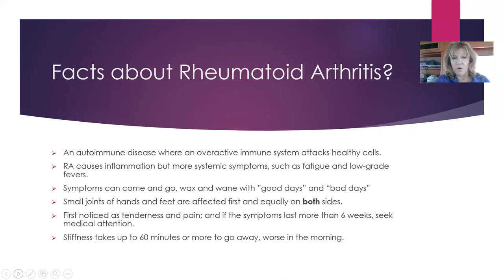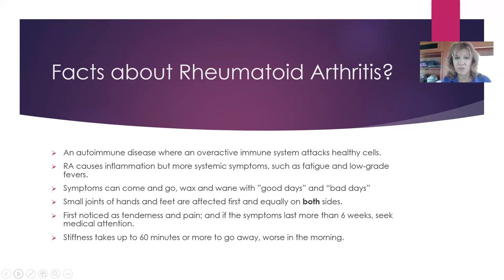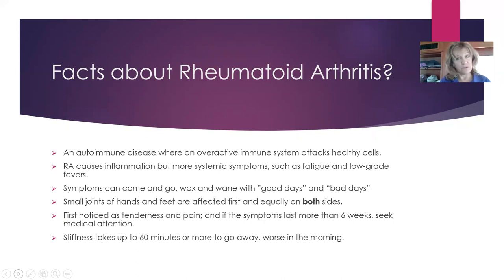With rheumatoid arthritis, the inflammation is more systemic — you can have problems in your eyes and other parts of your body. You wake up in the morning not feeling well, tired, with a low-grade fever, and symptoms can come and go. The key difference between OA and RA is that RA is symmetrical — if you get it in one hand, you'll get it in the other. It usually starts in the smaller joints. Stiffness can take 60 minutes or more to go away, and it's worse in the morning.